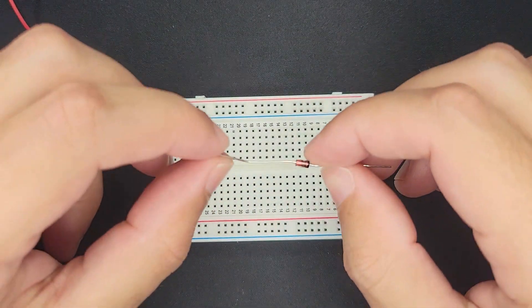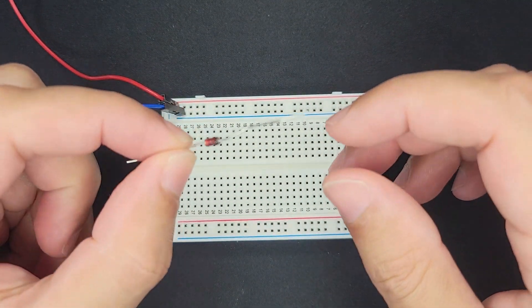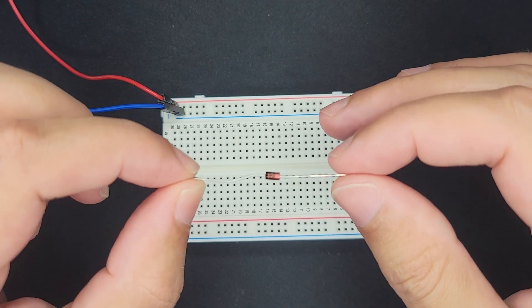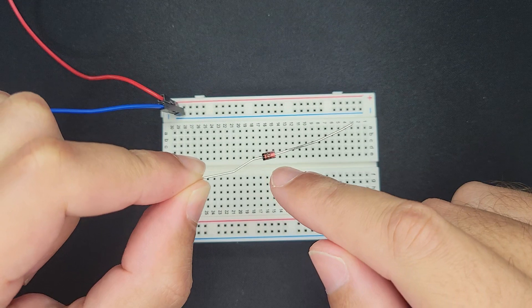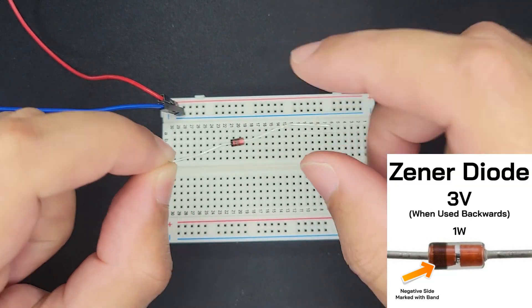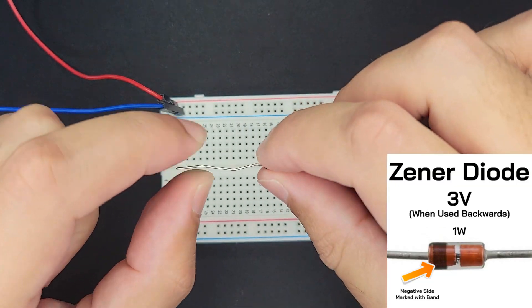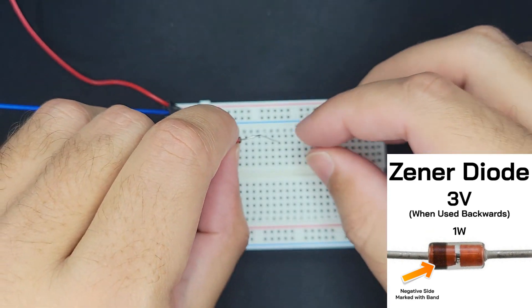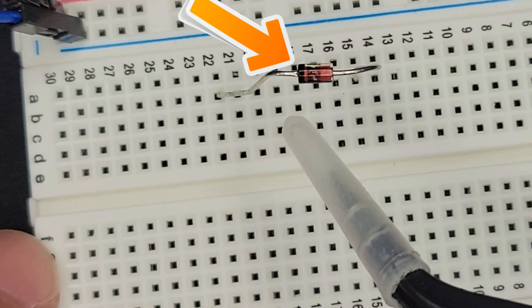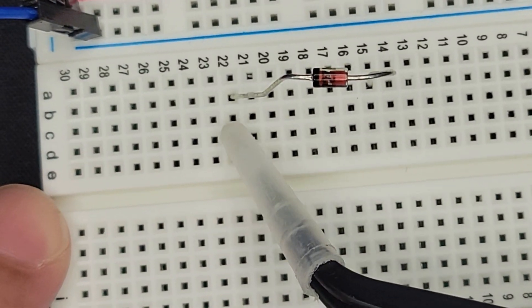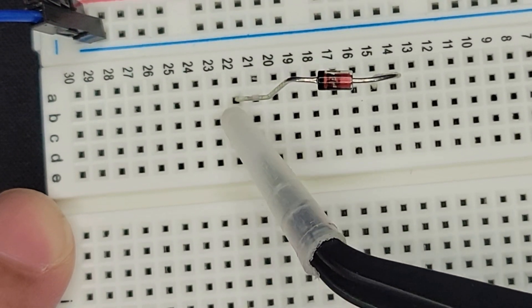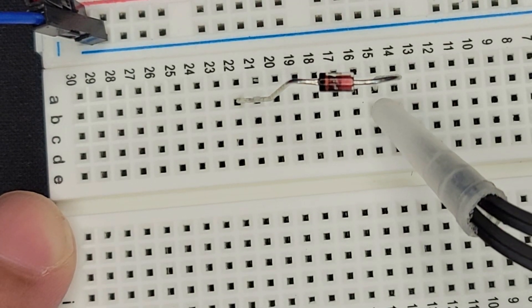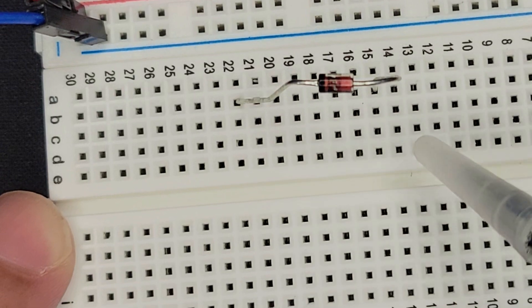Normally diodes just allow current to go in one direction, but these ones are special because you're supposed to use them backwards and then they regulate voltage. This is a 3 volt Zener diode and the idea is that if I have voltage higher than 3 volts, I can put this backwards and then we'll end up having the voltage that we want. Usually the strip is the negative side, so the idea is that if we put voltage here like 12 volts, then on this side we should only have 3 volts. So we'll essentially step the voltage down.